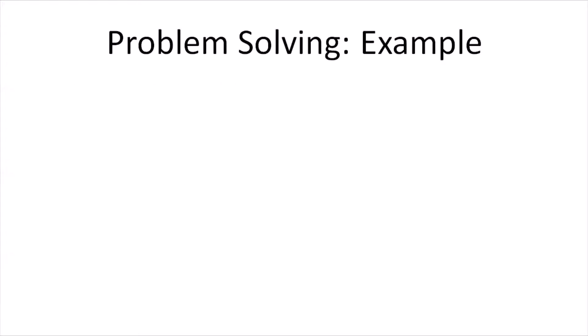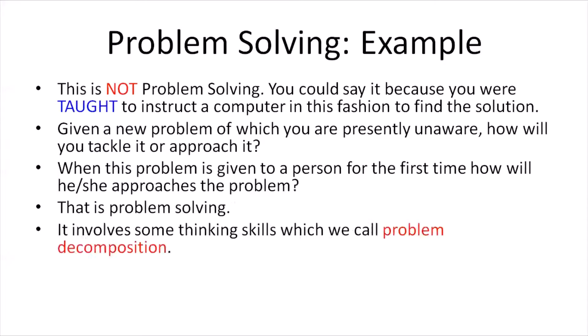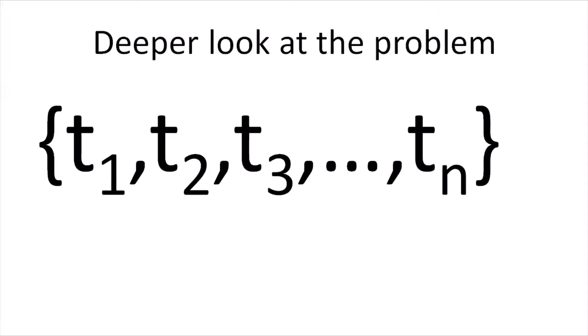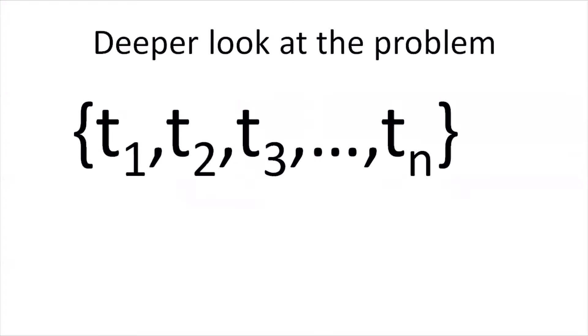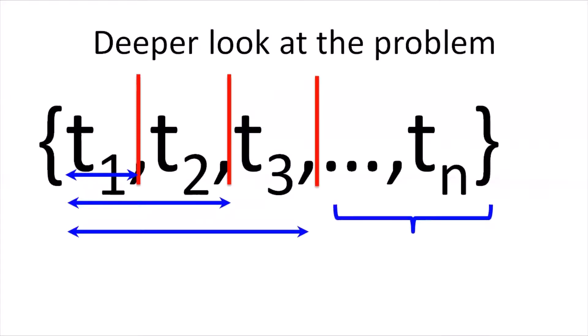Let us take a deeper look at the problem. Let t be the set of n numbers: t1, t2, t3, ... tn. First, we consider the problem comprising only one number, t1, and solve it — since there is only one number, it is the maximum. Next, we use the solution of this problem and compare it with the next number t2. For subsequent iterations at ti, the solution up to ti-1 is taken into consideration. This technique is called problem decomposition.